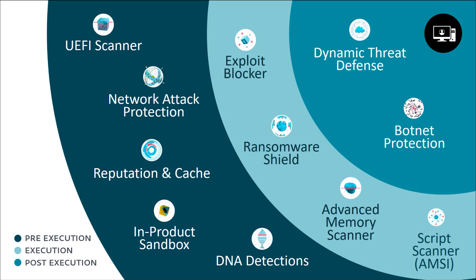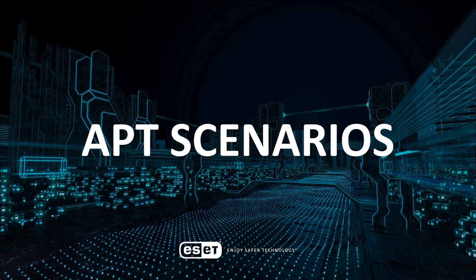Here's an overview of the various ESET detection layers capable of detecting threats either pre-execution, during execution, or post-execution. Now let's take a look at how this comes into play in an APT attack. I'll walk you through four APT attack scenarios based on real-life attacks we've analyzed. The various attacker techniques will be mapped to the MITRE ATT&CK knowledge base, along with the possible ways to detect them on multiple layers using endpoint security and EDR solutions.